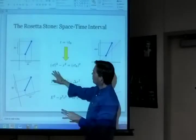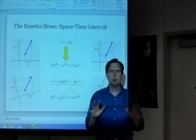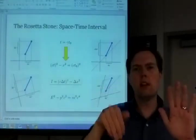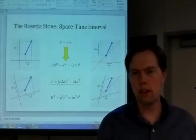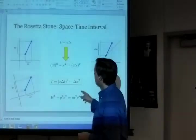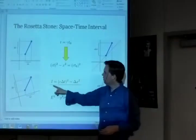This shows us in a compact way that if we have time dilation, we must have length contraction. They go together like this in order to maintain something called the space-time interval. That's what this formula represents.